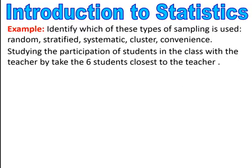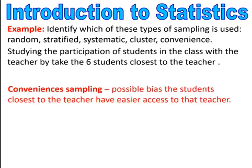This example: you're studying the participation of students in class with the teacher by taking the six students closest to the teacher. This is convenience sampling — it's the six closest students to the teacher. The possible bias is that students closest to the teacher have easier access to that teacher.